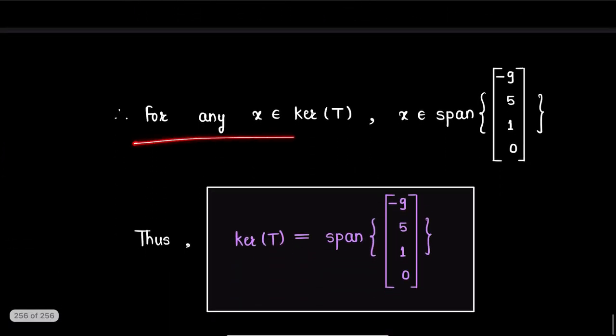Therefore, for any vector x in kernel T, we have x belongs to span of this single vector [-9, 5, 1, 0]. And therefore, as x is any arbitrary vector in kernel T, thus, kernel T will be span of this single column vector [-9, 5, 1, 0]. So, this will be the required kernel of the given linear transformation.